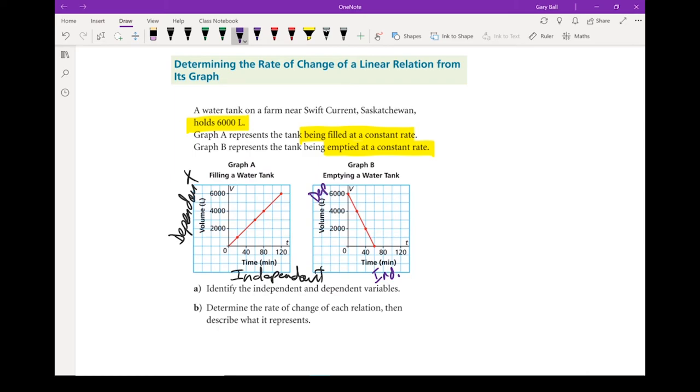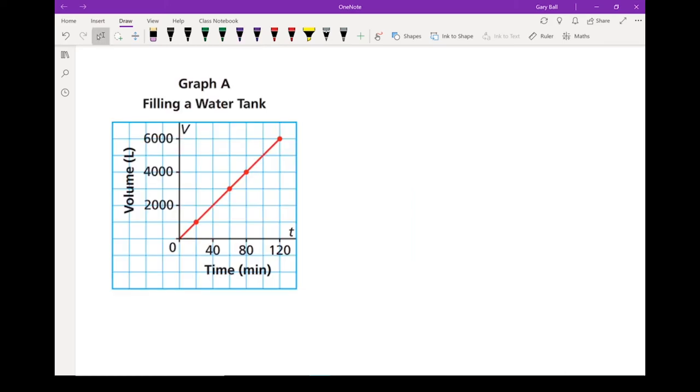Now let's take a look at the rate of change of each of those relations. All right, let's start with this one. Graph A, filling that water tank. I want you to remember that rate of change M equals rise over run. So what I'm going to do is I'm going to pick two points off of this graph. Now look for two points that hit the grid perfectly. Now this is a fairly easy one because all the points hit the grid perfectly. I'm going to pick this one and that one. There's lots of other choices which should give you the same answer.